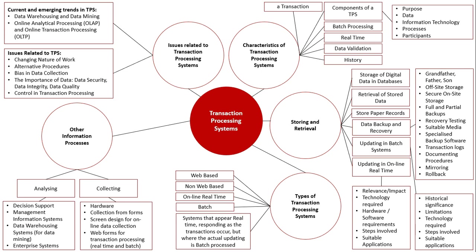We also look at alternative procedures — what happens if the transaction processing system is not available. Is there a backup system that can work locally within the workplace while the system or network is down? If there is no access to the system at all, is there a paper-based method set up to record product IDs of things being purchased, which can then be entered into the system when it comes back online?